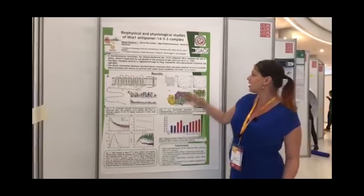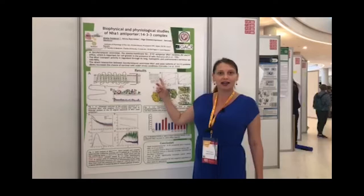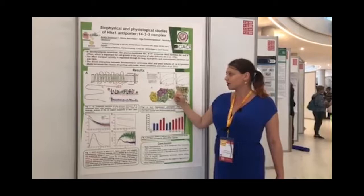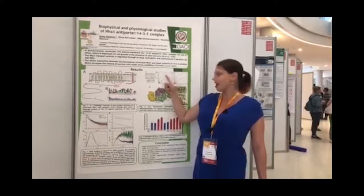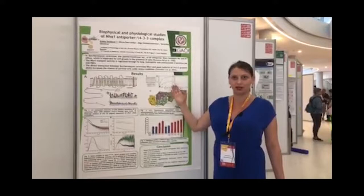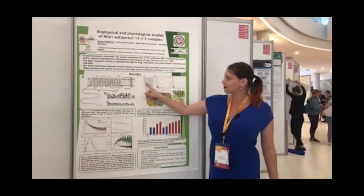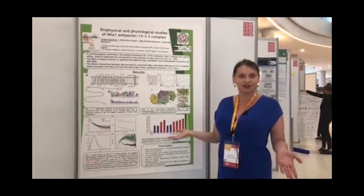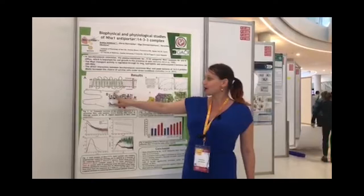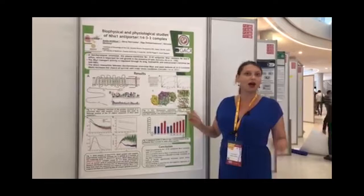We proved it with a fluorescent polarization assay. We used fluorescent labeled peptides and measured the binding affinity to both yeast 14-3-3 isoforms. As you can see, serines 479 and 481 definitely interact with 14-3-3 protein. We co-crystallized the peptide containing phosphoserine 481 with 14-3-3 and got a structure up to 2.9 Angstrom resolution. So we proved that serine 481 on the disordered C-terminal is a 14-3-3 binding motif.